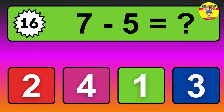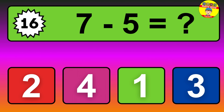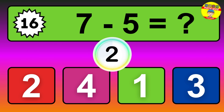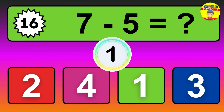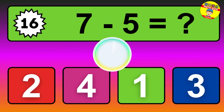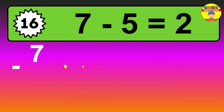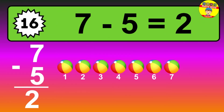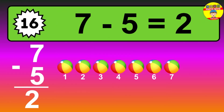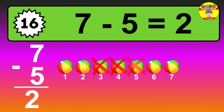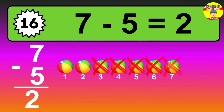Question sixteen: seven minus five equals what? The answer is seven minus five is two. Let's count it: one, two.